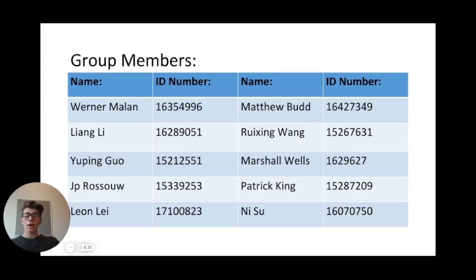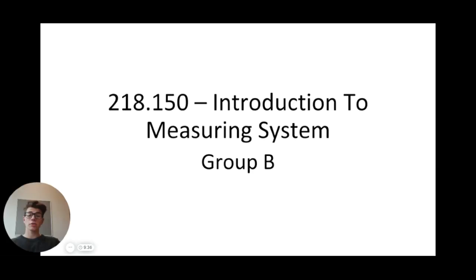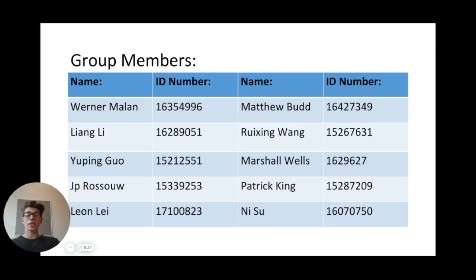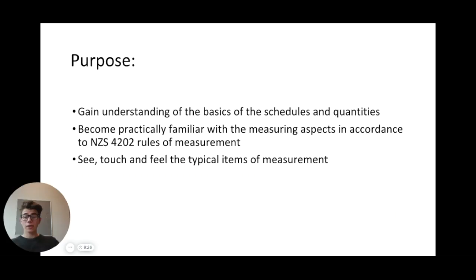Welcome to Group B's 218150 Introduction to Measuring Systems Assignment. These are the group members involved, with photos of the site safe passport as well as Massey student ID displayed in the written report. The key purpose of this report is to display Group B's understanding of the basics of schedules of quantities, and allow students to become practically familiar with the measuring aspects within the construction industry in accordance with New Zealand Standard 4202, Measurement Rules of Measurement.